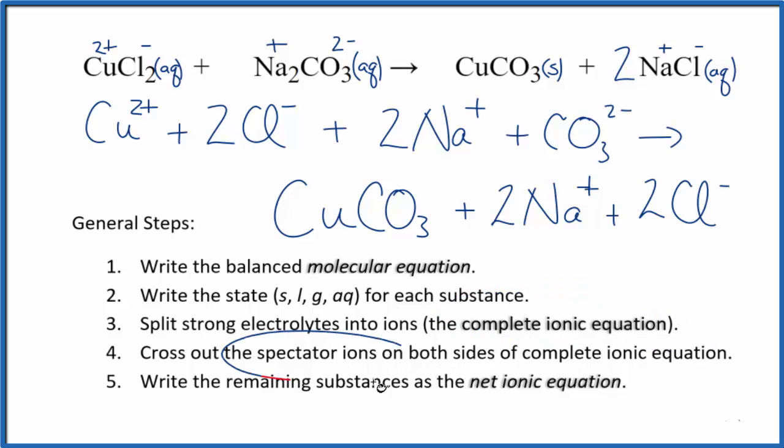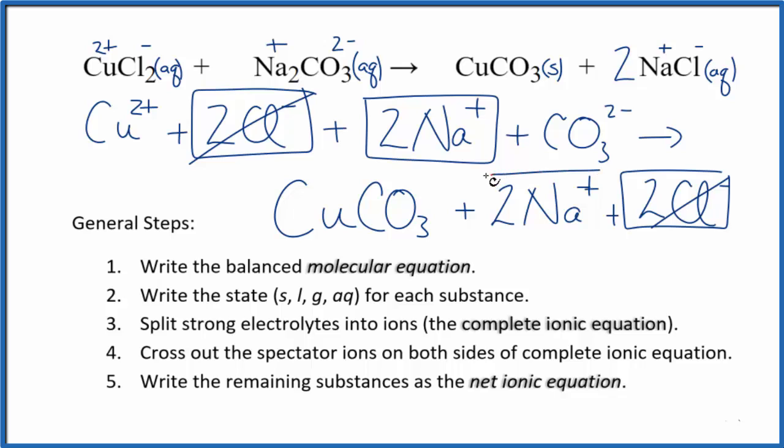Now we can cross out the spectator ions. They're on both sides. In the reactants here, I have two chloride ions. In the products here, I have two chloride ions. Those are spectator ions. We can cross those out. In the reactants, we have these two sodium ions. And in the products, spectator ions. We cross them out.